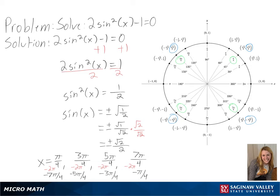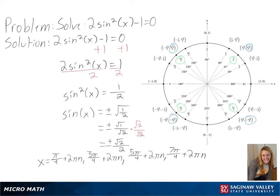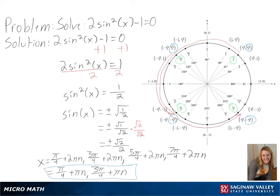We can simplify this by adding 2π·n to all of our values. We can further simplify this to get π/4 + π·n and 3π/4 + π·n, since adding π will also give us 5π/4 and 7π/4. And with that, we have solved our trig equation.